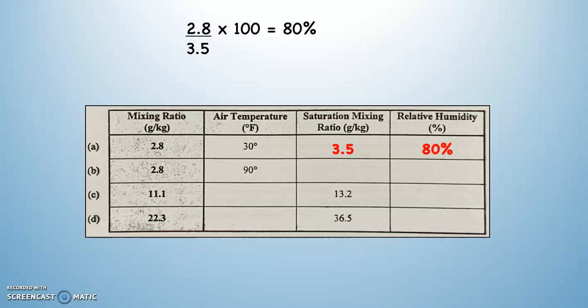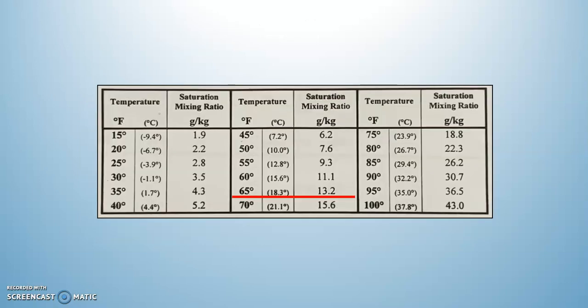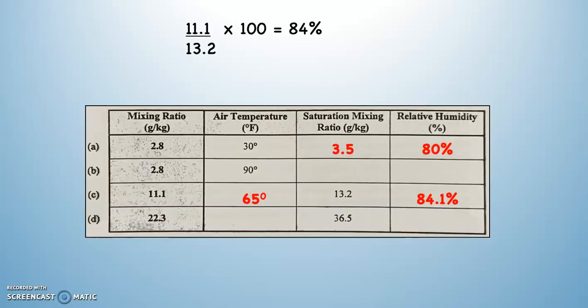Now look at C. In C, the problem is mixed up a little bit, but you can do it. We have mixing ratio at 11.1 and saturation mixing ratio at 13.2. Remember, saturation mixing ratio is going to give you air temperature. Then we're going to take 11.1 divided by 13.2, and that gives us relative humidity. First, let's get the air temperature — we go to the graph. We have an SMR of 13.2; I underlined it. What number does it correspond with? 65. So we put 65 where the air temperature is, then take 11.1 divided by 13.2 times 100, which is 84.1%.